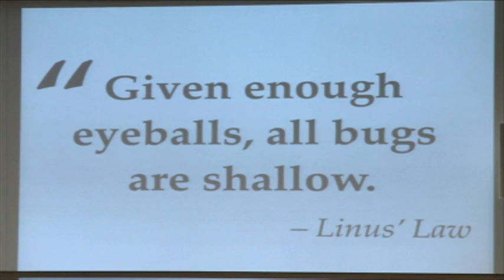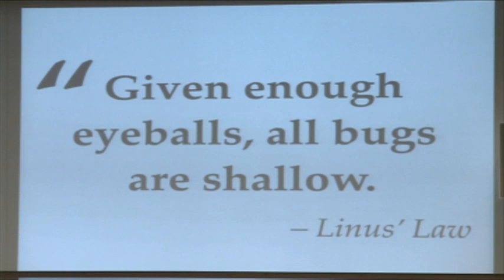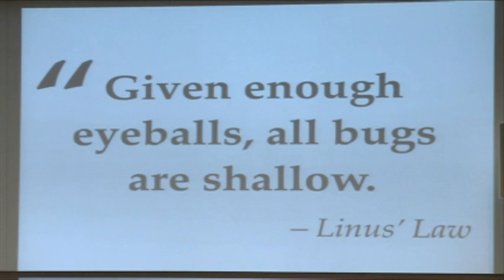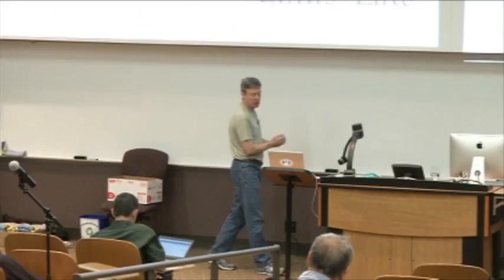Linus' Law is that given enough eyeballs, all bugs are shallow. Which is to say, if you've got an awful lot of people looking at a piece of software you've put out, and those people are involved in the project and contributing back, someone is going to know how to fix the problem. The creator may not know how to fix the problem, but somebody out there, when you've got thousands and thousands of users, is going to be able to help. By the way, that help is not necessarily the patch that fixes it — maybe it's the bug report that tells you a better way of doing something, or the bug report that centers things in so well that the original creator can fix it, or the report that comes back and says we need it to do this thing, and you see why, and that helps you make it better than it ever could have been before.